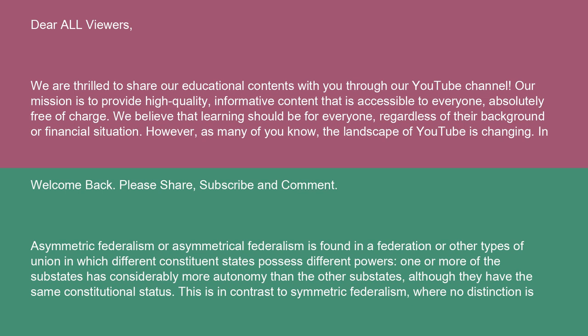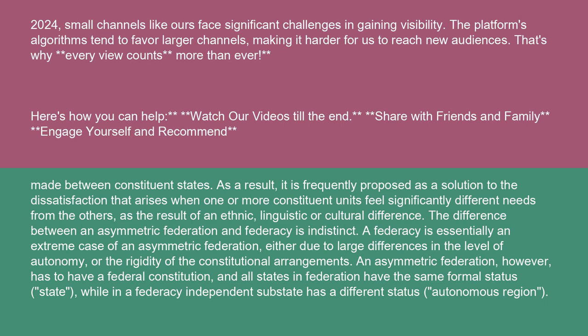Asymmetric federalism is found in a federation or other types of union in which different constituent states possess different powers. One or more of the sub-states has considerably more autonomy than the other sub-states, although they have the same constitutional status. This is in contrast to symmetric federalism, where no distinction is made between constituent states. As a result, it is frequently proposed as a solution to the dissatisfaction that arises when one or more constituent units feel significantly different needs from the others as the result of an ethnic, linguistic, or cultural difference.